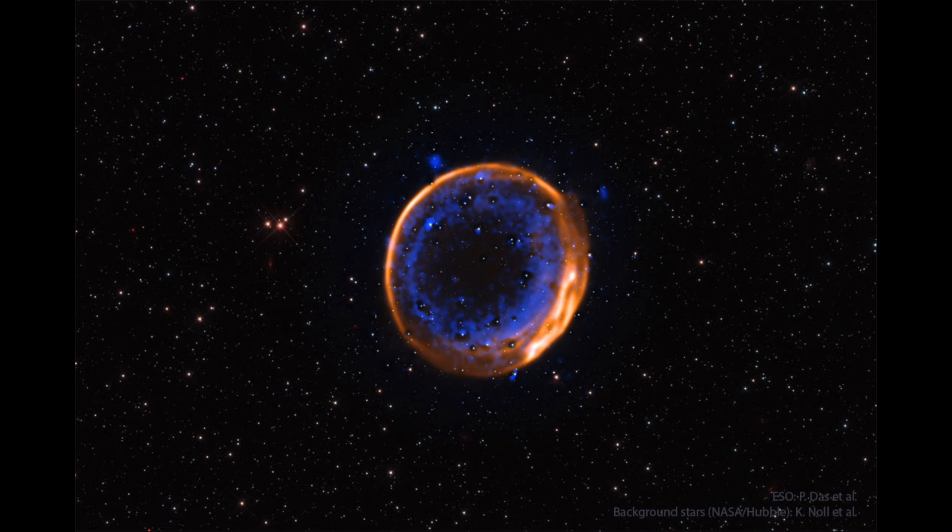In order for a white dwarf to explode, it must have a companion star there feeding it material. So the companion star can expand, become a red giant, and then it ends up being close enough to the other star that it will then transfer material to it, and that's what initiates the supernova explosion.